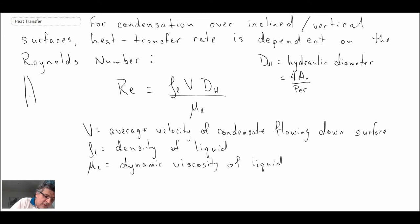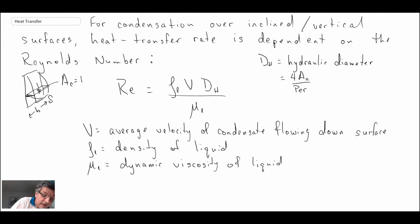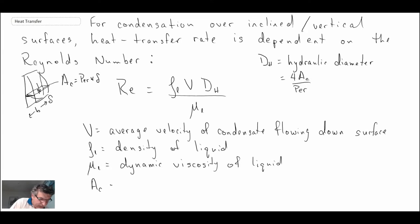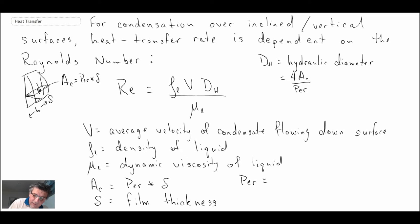If we look at a surface where we have a film growing, delta is typically the film thickness, and let's say this plate is of width B. The film is moving downward, so AC is essentially this cross-sectional area, which is going to be the perimeter times delta. For a vertical plate, the perimeter would be B — that is, for a unit length it would be B.